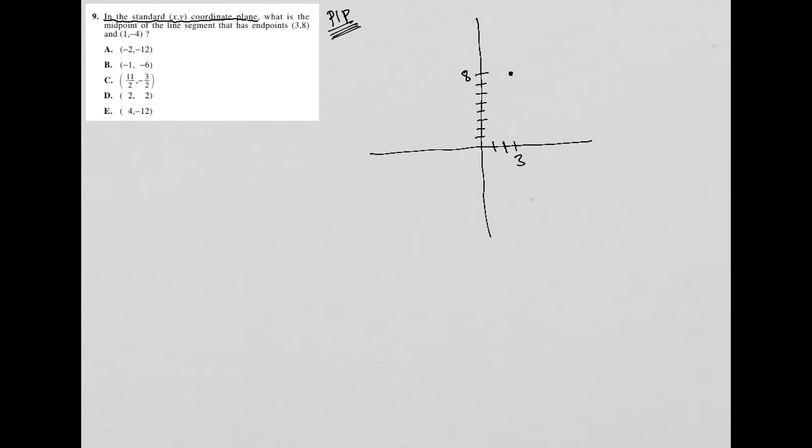So there's 3, 8 and 1, negative 4. So I already have 1, but let's go down to negative 4. So 1, 2, 3, 4. So that's negative 4. So here is 1, negative 4. So my line is here. And the midpoint I know has to be somewhere in this area, right? So let's check out our answer choices.